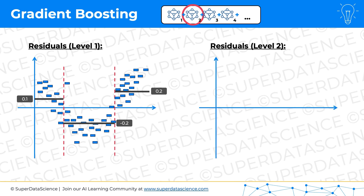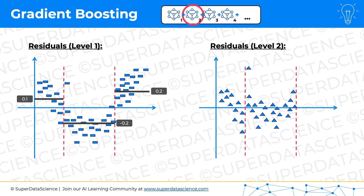Now we can calculate the residuals for each leaf. For the first leaf we subtract 0.1 from all the values. For the second leaf we subtract minus 0.2, and for the third leaf we get those residuals. By predicting with model two, the residuals are even smaller — these used to be the residuals, and now they're all getting closer to zero. The error is becoming smaller as we add more and more models.